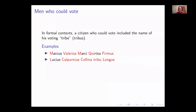Another thing you can include in formal contexts, if you are a citizen who can vote, is the name of your voting tribe. There's some Roman technicality about the difference between being a Roman citizen and being able to vote — originally you had to physically show up in Rome on voting day. This was slowly extended to people in other parts of Italy and eventually beyond. There was a technicality where you could be essentially a citizen but not belong to a tribe — a tribus, named because there were mythically at first three tribes, though historically there were more.